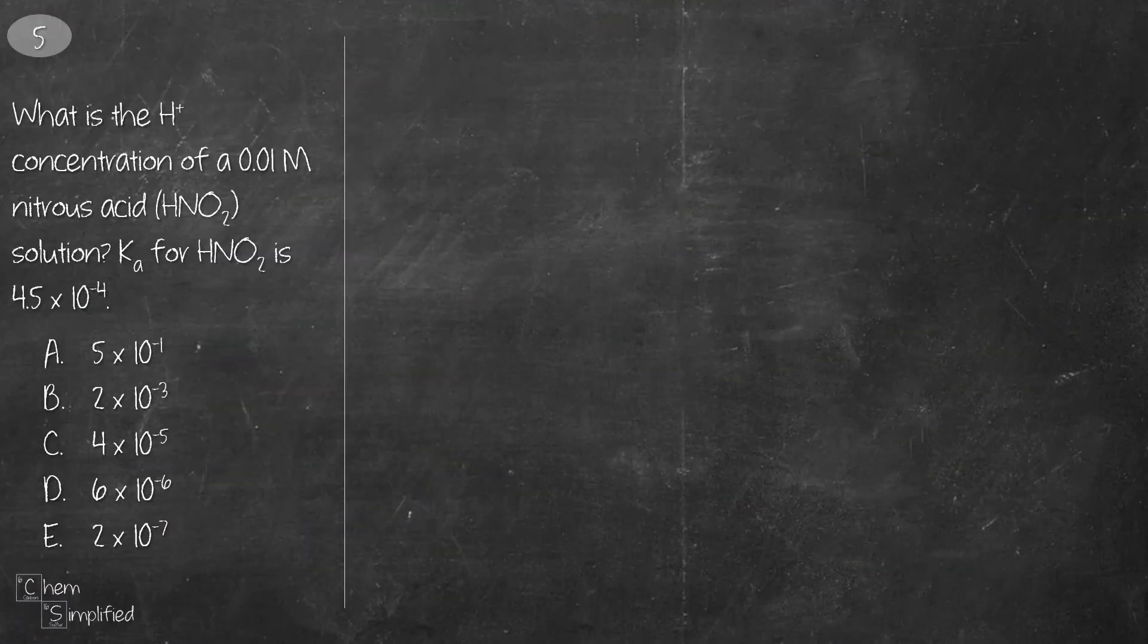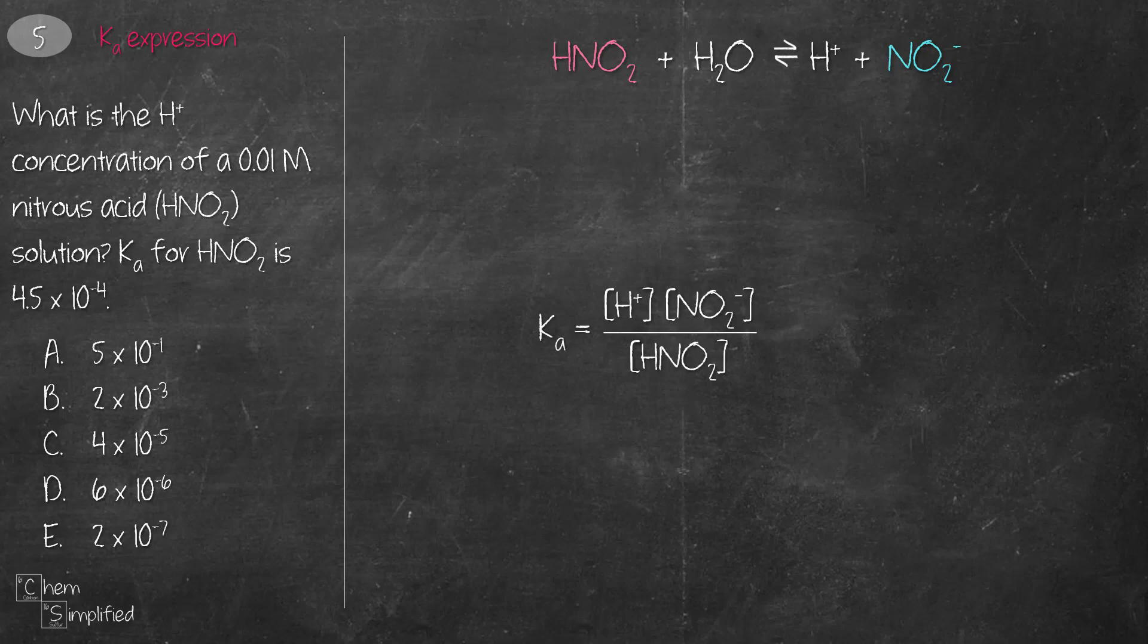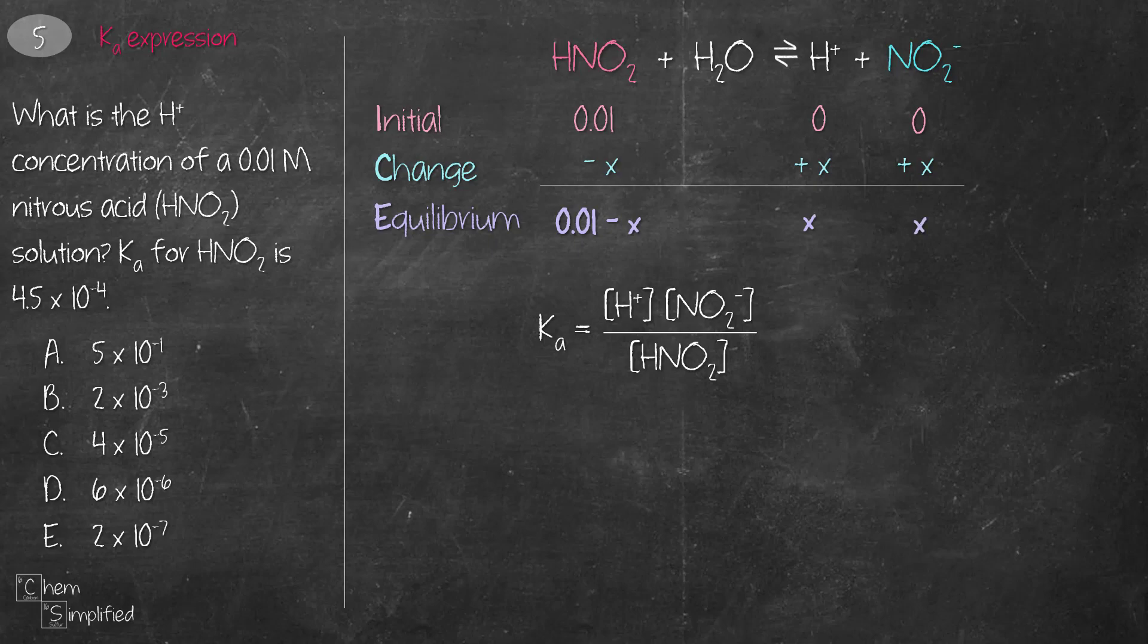This question tests on the Ka expression. Ionization of nitrous acid gives H+ and NO2-. The Ka expression can be written as such. Now initially, we have 0.01 molar of nitrous acid and 0 molar of the ions. And when this weak acid, which is nitrous acid, starts to ionize, it's not going to be 100%. So we're just going to call it X, and that means it's going to form X molar of the ions as well. After some time, the acid-base reaction will reach an equilibrium. That means we just add both the initial and change terms together, and we get 0.01 minus X for HNO2, and X for both conjugate acid and conjugate base.